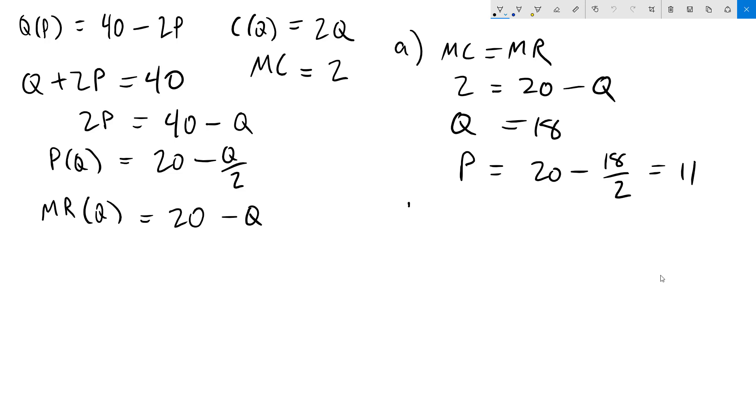In part B we are going to do two-part pricing. In two-part pricing we always set a price equal to marginal cost, which of course is 2. To figure out the quantity sold we will plug that price into our demand function. So our quantity is going to be 40 minus 2 times 2, which will be 36.